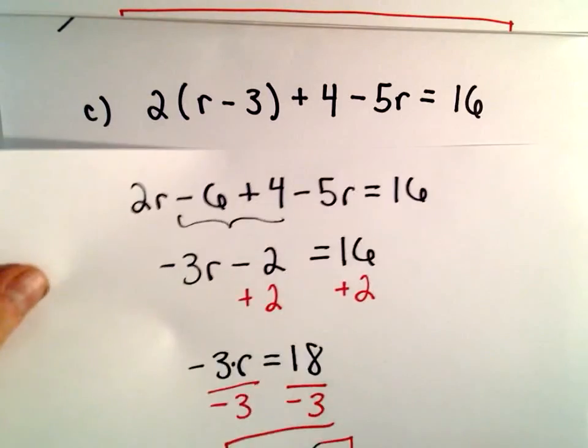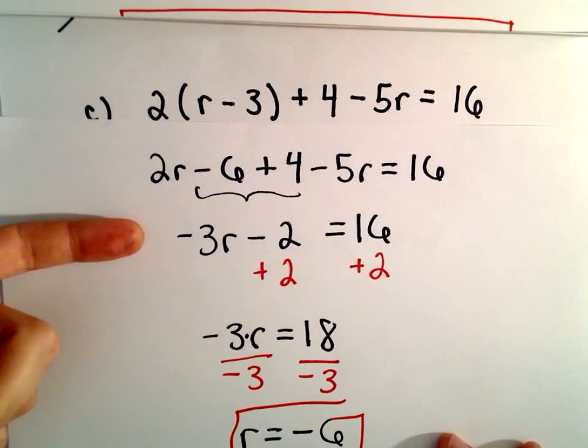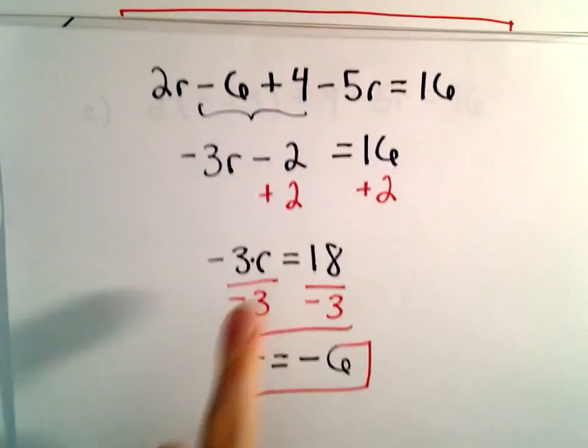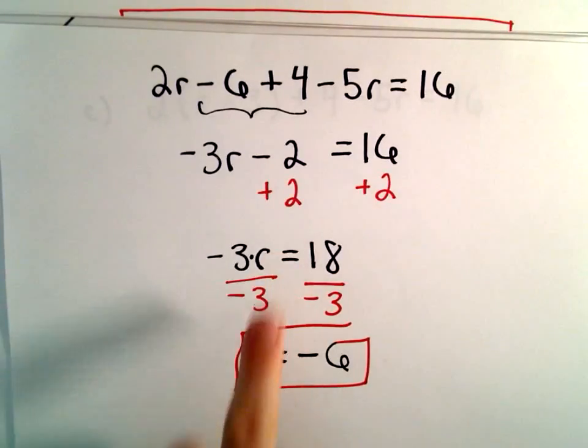So again, kind of a basic outline. Get rid of the parentheses. Combine like terms. Get the term involving your variable isolated. And then just divide by the coefficient.